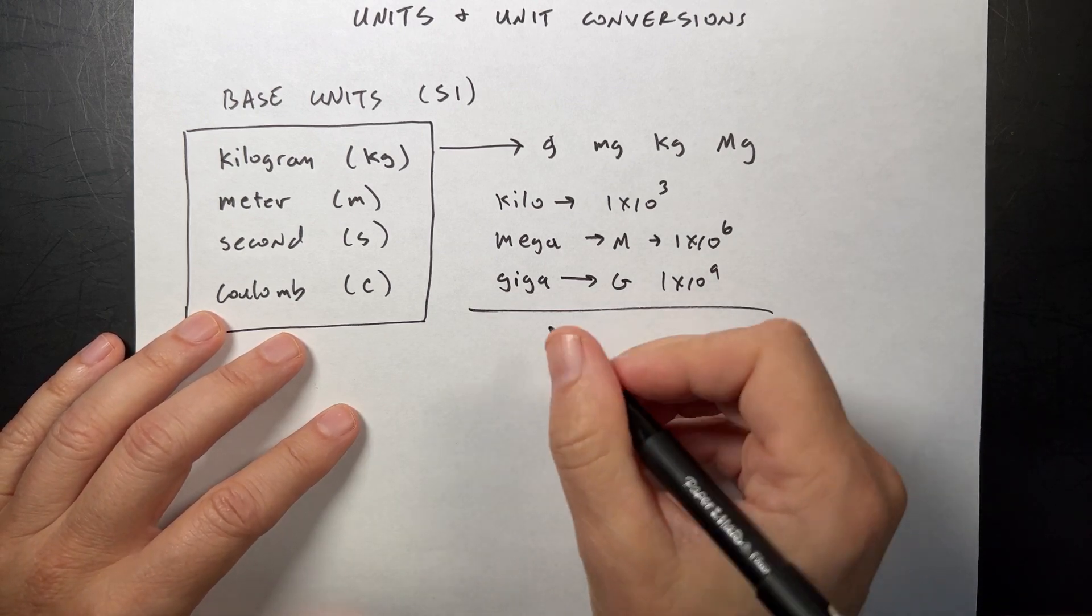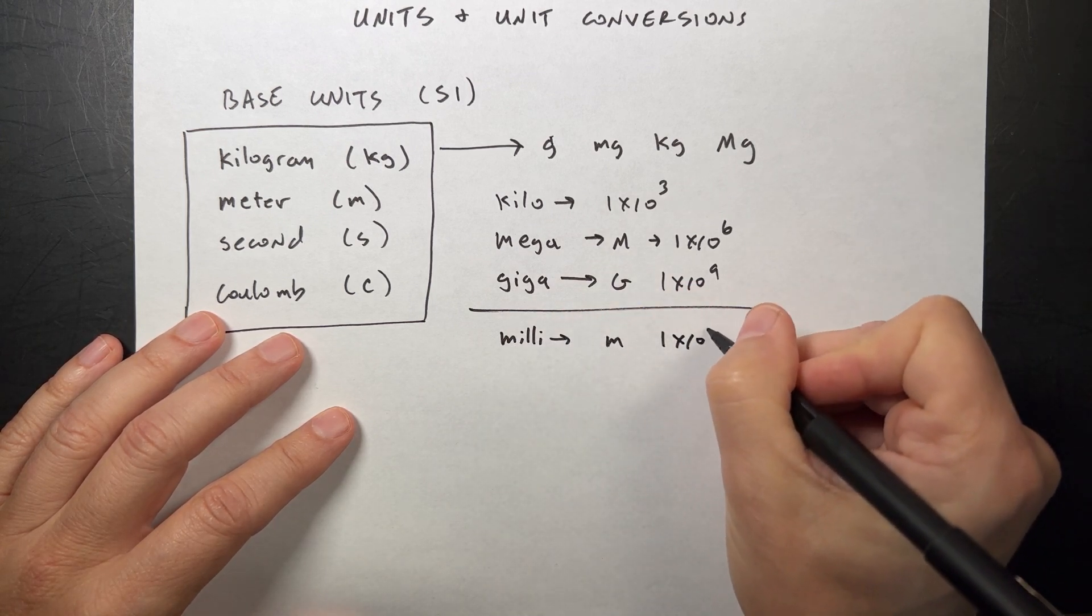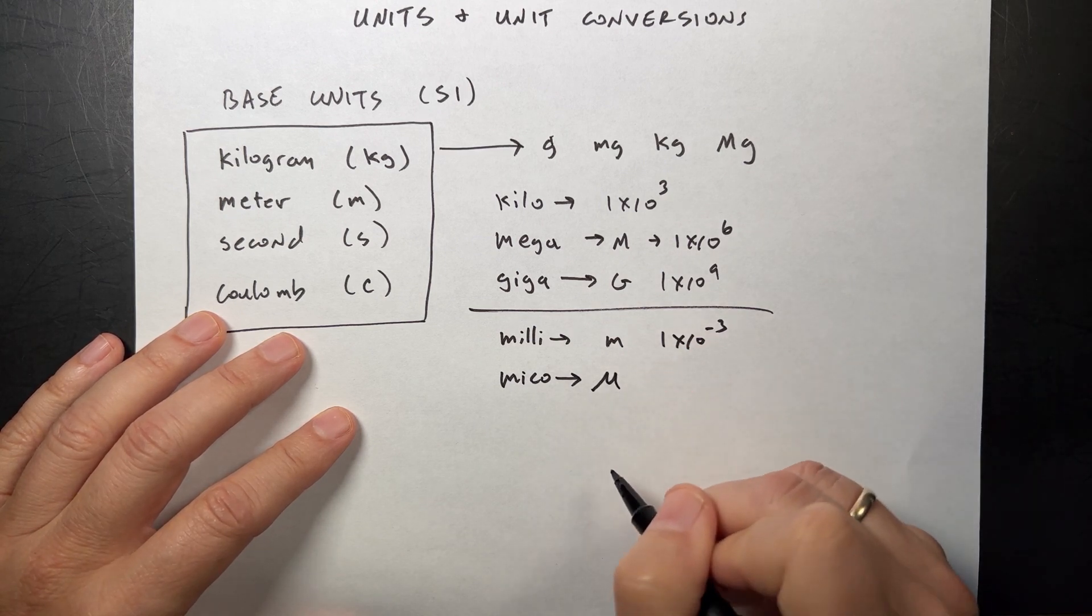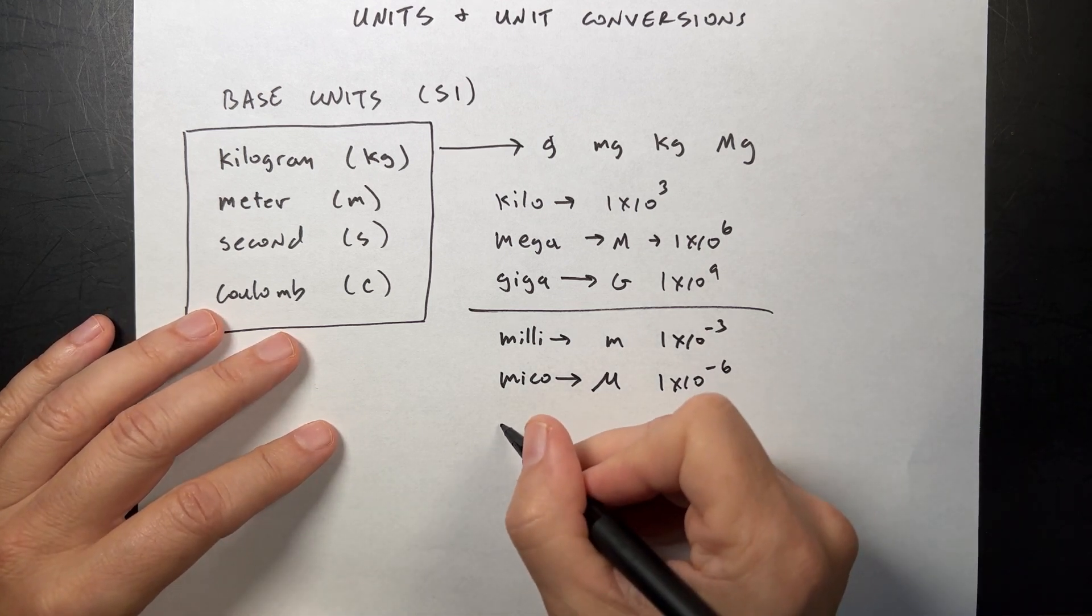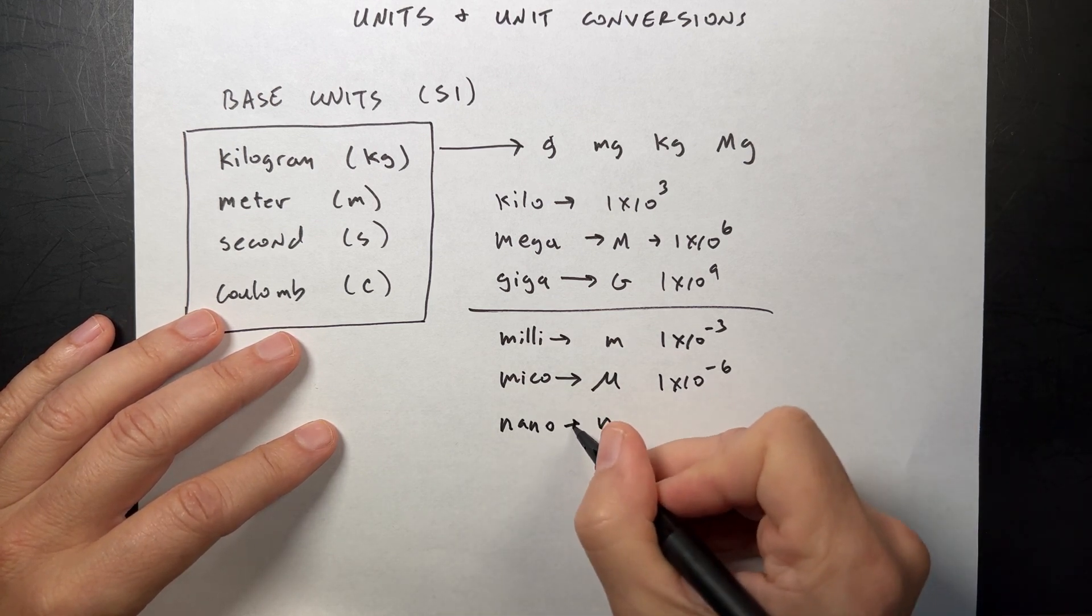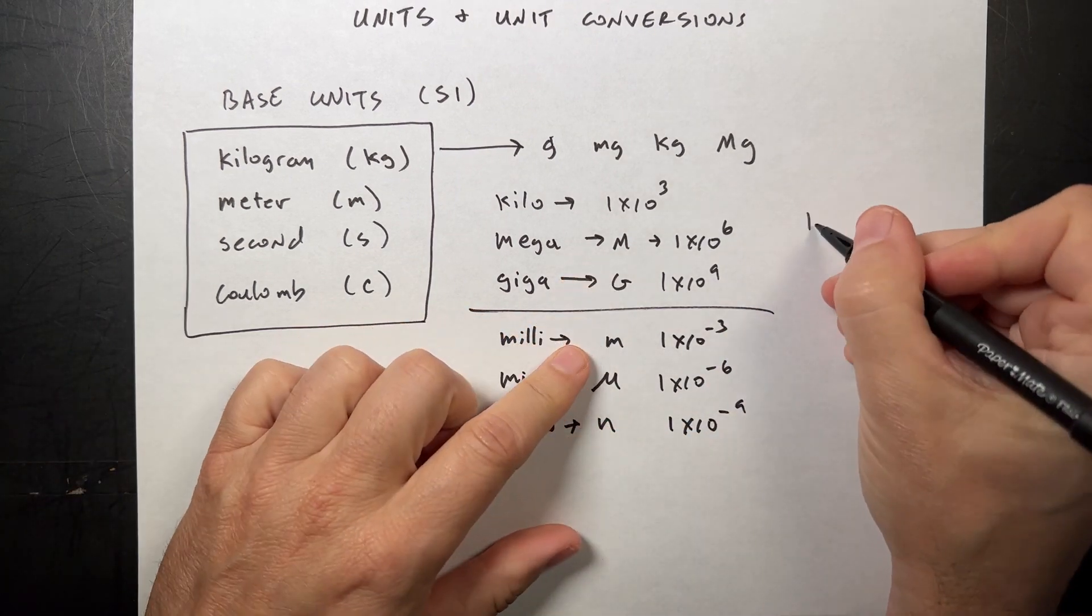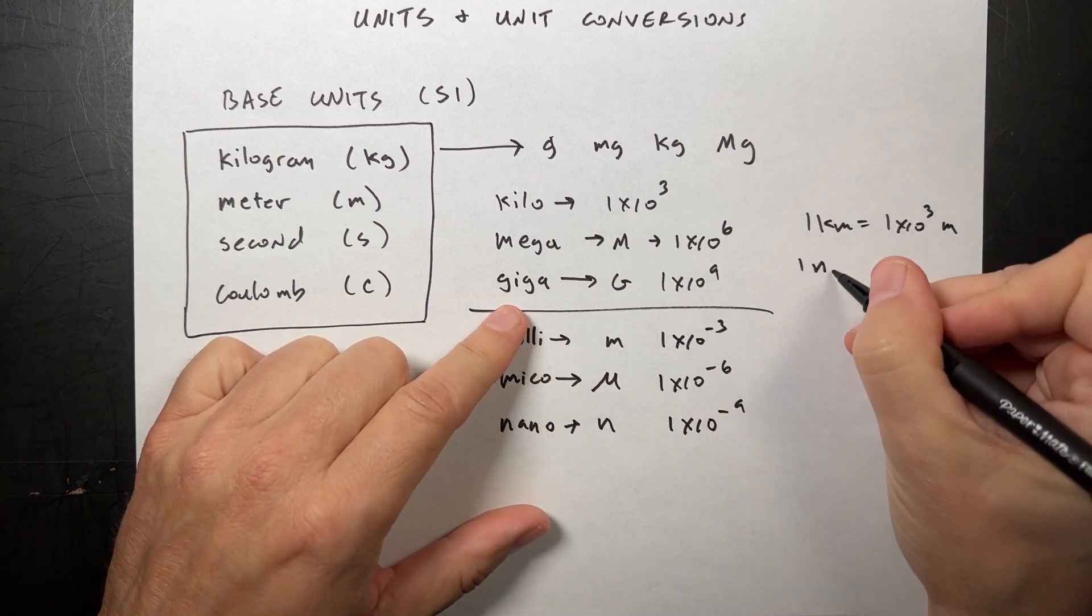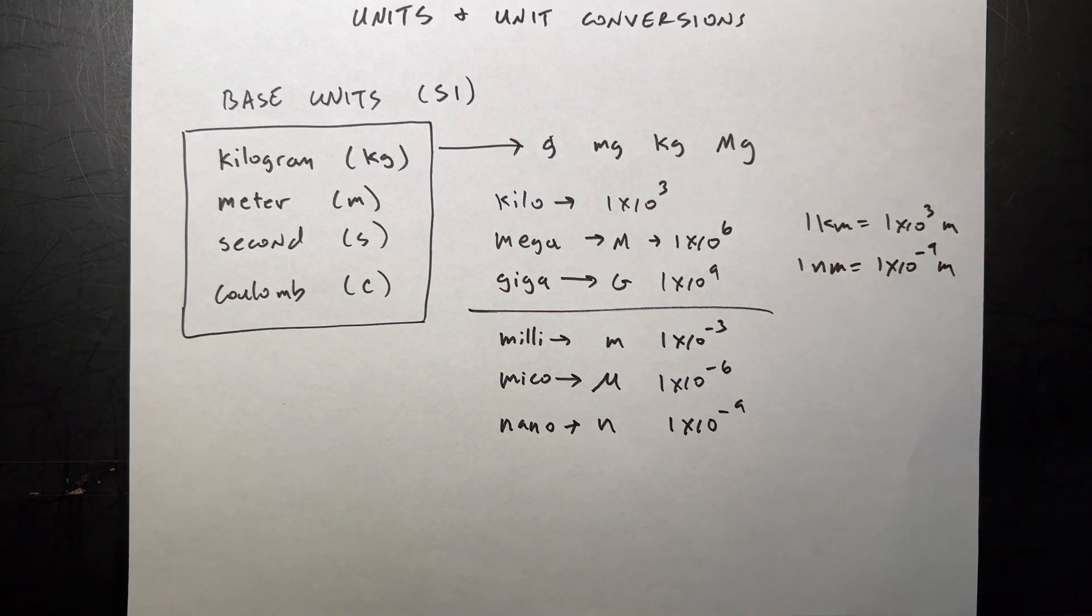And then we have smaller versions of these units. We have the milli, which is lowercase m, one times ten to the negative third. Then we have micro. And this is usually represented with a Greek letter mu. And that's one times ten to the negative sixth. That's one millionth. And then we have other really small ones. The only other one that I really want to look at is the nano. And that's lowercase n. And that's one times ten to the negative ninth. So if you had a nanogram, which no one ever says that. But we have a nanometer or kilometer.